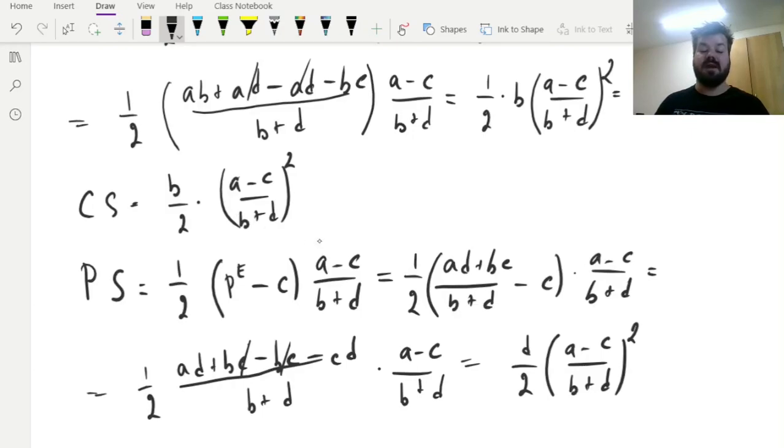They are very similar formulae, and they are only different in terms of this particular factor over here. Here we've got the demand slope coefficient, B, and here we have got the supply slope coefficient, D. And that would be very important for the distribution of taxes paid by consumers and producers respectively.